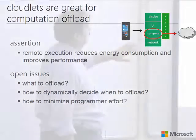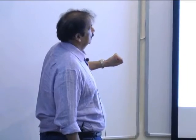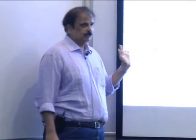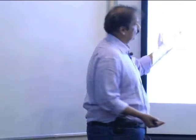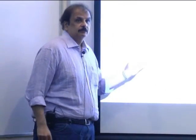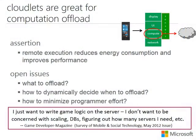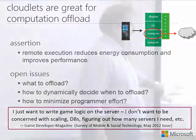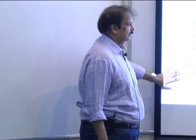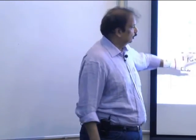Another thing a cloudlet can do is computation offload — which I started the topic with. The question from a research and engineering perspective is: what do you offload? How much? How to dynamically decide whether it's a good idea to offload? Because if the network is bad and going up and down, you don't want to do it. And how do you do it without making the programmer's life very hard? If the programmer has to constantly think about offloading, you're not going to win.